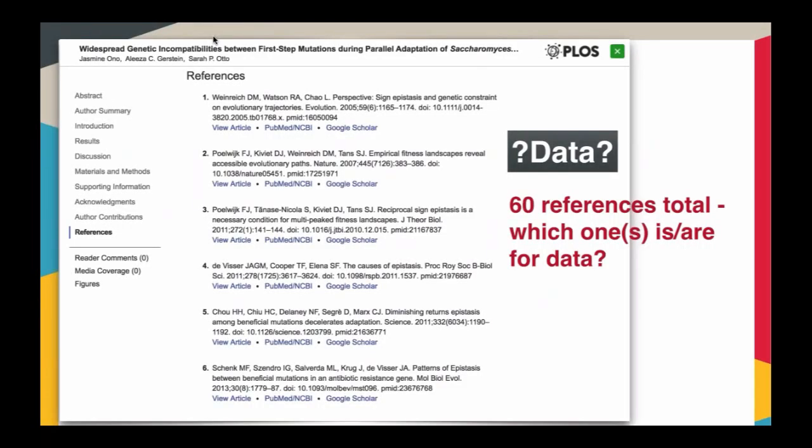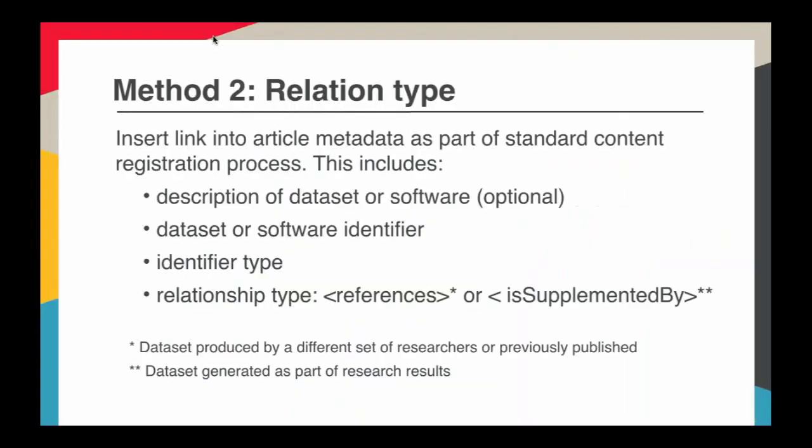The first method is one that has been promoted by the Joint Declaration of Data Citation Principles. This was a synthesis effort led by Force 11, which brought together many different groups working in the space. You can deposit your data citations using their recommendation by adding the data set or software as a reference in the references section. If the reference is a DataCite DOI, then we automatically make this link and share it out to the community. The limitation here, however, is that references being references, you stick it in, there might be 30, 60, 100 references for a paper.